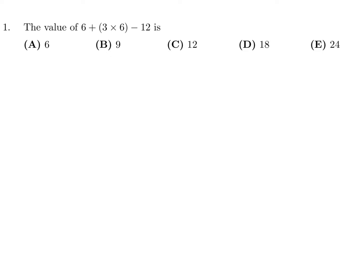Question number 1. The value of 6 plus 3 times 6 minus 12. So we've got to do the brackets first. So that would be 18. And then this would be 6 plus 18, which is 24, minus 12, which is 12. So that's C for number 1.